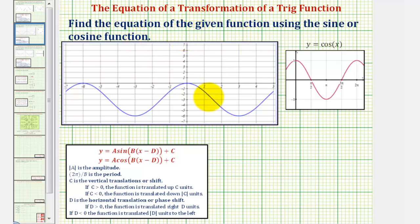We want to find the equation of the function graphed here in blue using the sine or cosine function. We'll build our equation in one of these two forms here, where the absolute value of A is the amplitude, two pi divided by B is the period, C affects the vertical shift, and D affects the horizontal shift.